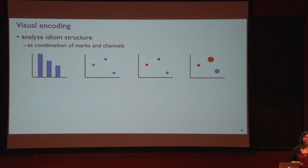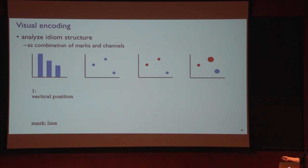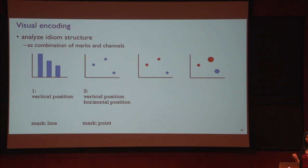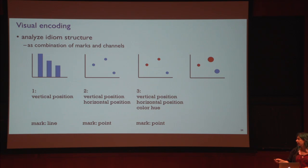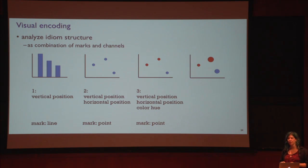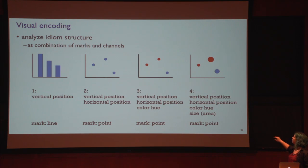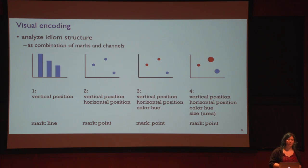Now we can talk about these idioms as combinations of marks and channels. With a bar chart, we're using vertical position to encode quantitative information and our mark is a line. In a scatter plot, we separately encode different attributes with vertical and horizontal position, and we switch to a point mark. When we color a scatter plot, we're adding a third attribute and a third channel — specifically the hue aspect of color. We'll be talking more about how to decompose color into multiple channels. And finally, we could size code those color-coded points, adding a fourth attribute while still staying with a point mark.